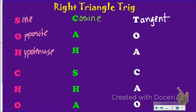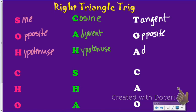Then cosine was the ratio of my adjacent side over the hypotenuse. Remember, adjacent was the side next to that angle that wasn't the hypotenuse. Opposite was across — it didn't touch — and adjacent was next to. Then tangent was the ratio of my opposite side over the adjacent side.